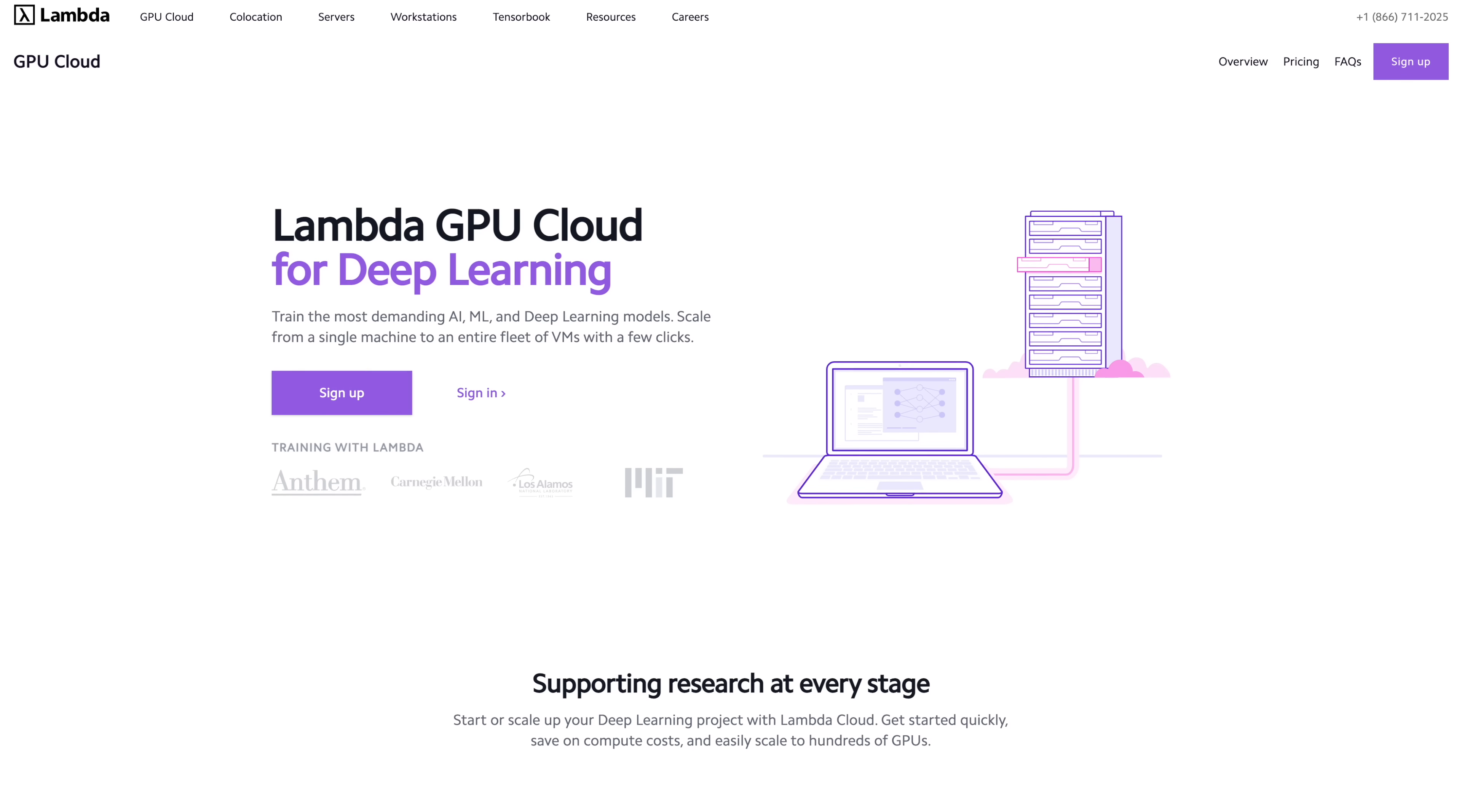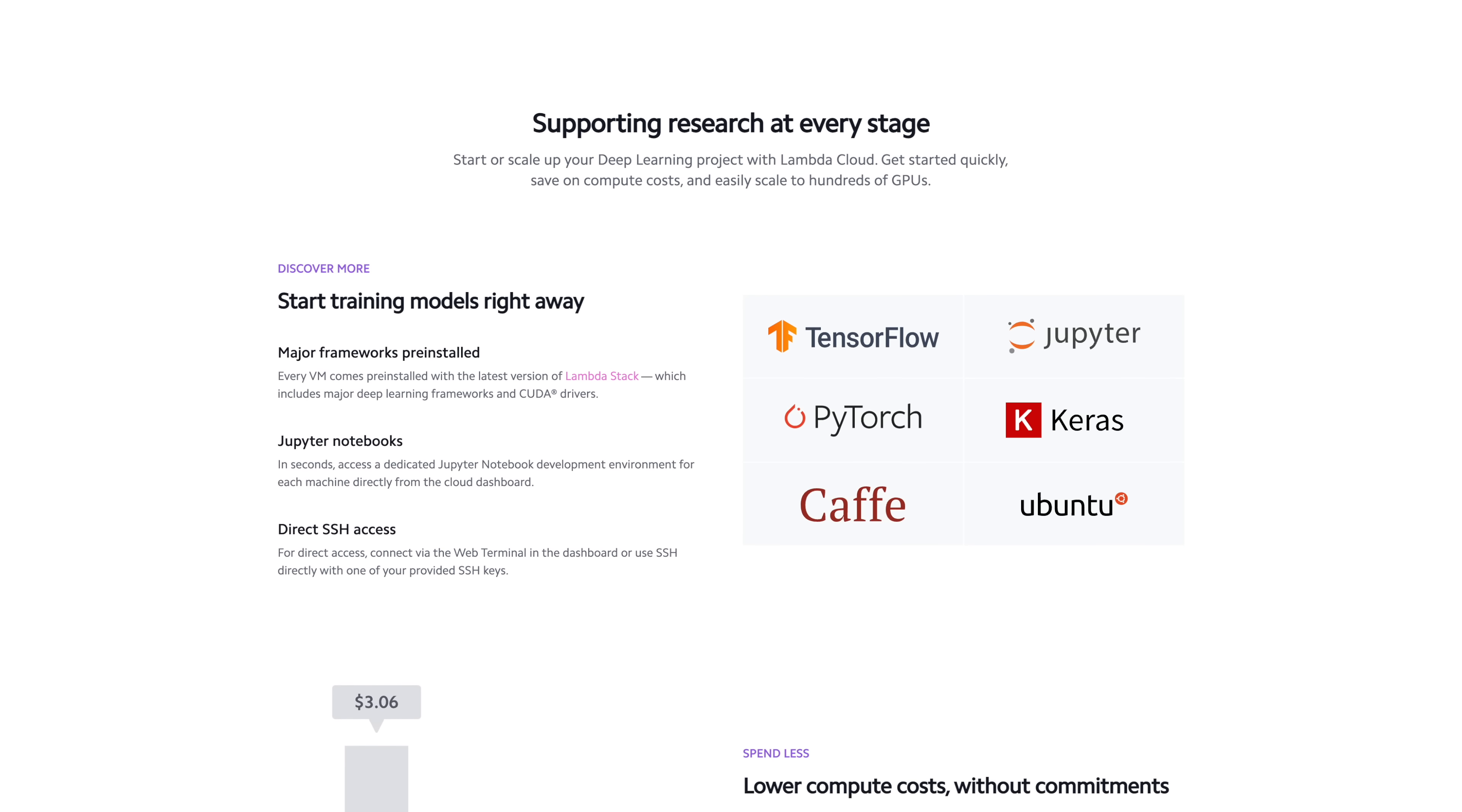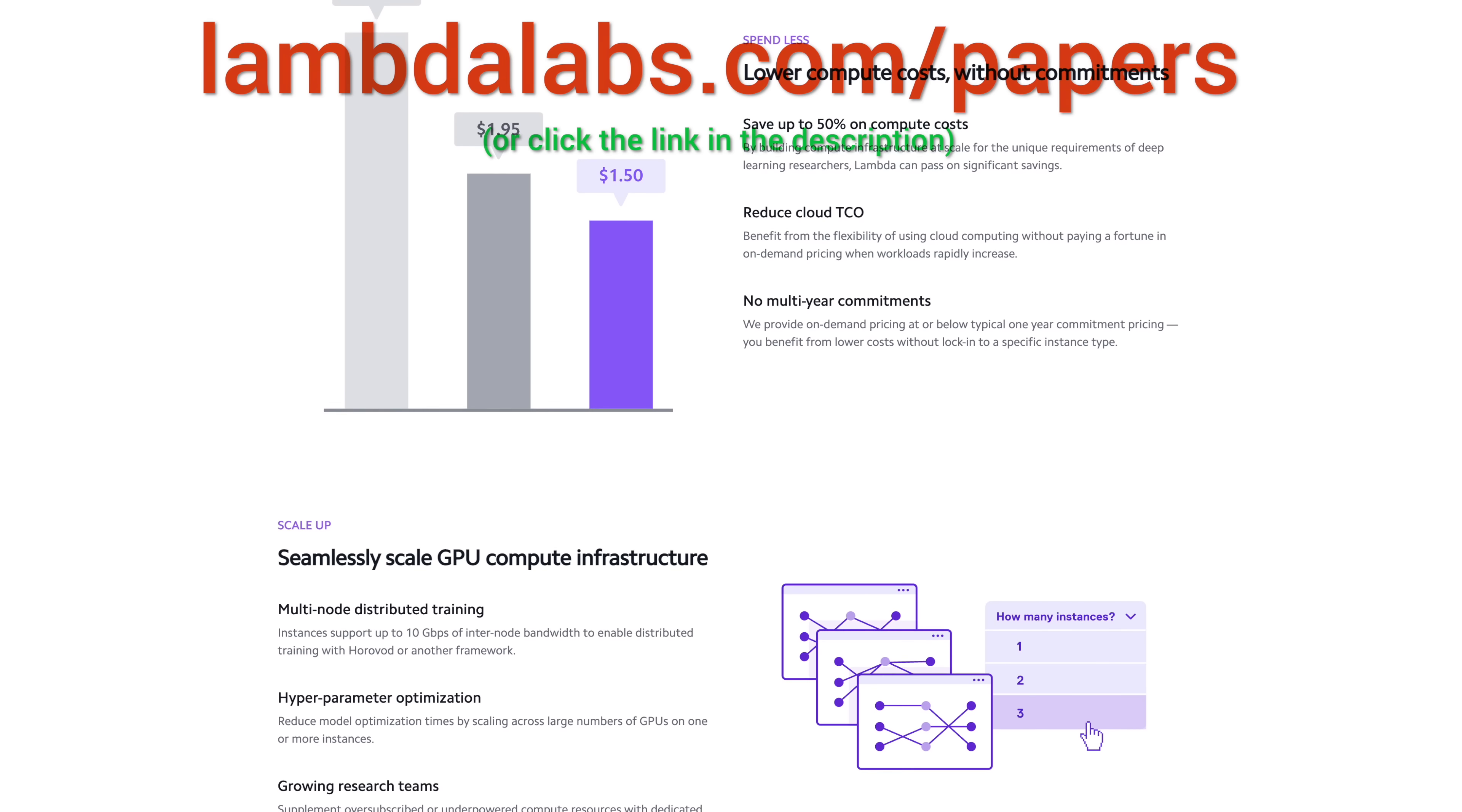This episode has been supported by Lambda GPU Cloud. If you are looking for inexpensive cloud GPUs for AI, check out Lambda GPU Cloud. Get this, they've recently launched an Nvidia RTX A6000 with 48 gigabytes of memory. And, hold on to your papers because Lambda GPU Cloud can cost less than half of AWS and Azure. Join researchers at organizations like Apple, MIT, and Caltech in using Lambda Cloud. Make sure to go to lambdalabs.com/papers to sign up for one of their amazing GPU instances today.